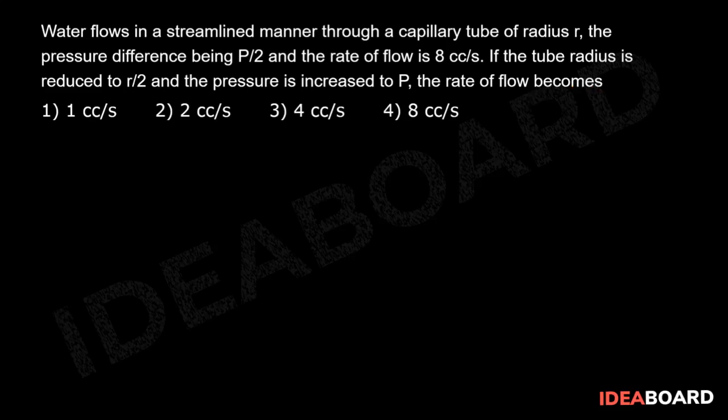Volume flow rate in a capillary tube is given by Poiseuille's equation, which is v dot equals p pi r to the power of 4 by 8 eta l.